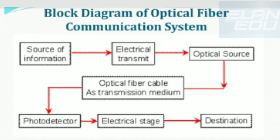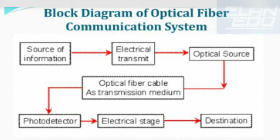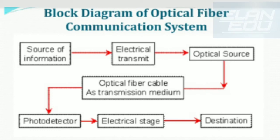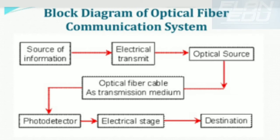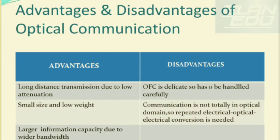After conversion of electrical data into optical pulses, these pulses are transmitted through the optical fiber as the transmission medium over a longer distance. At the receiving end, the optical signals are received by a photodetector as the first block of the receiver section. The optical signals are then converted back into electrical signals — the reverse of what was done at the transmission end. These electrical signals are then delivered to the destination as an end user.